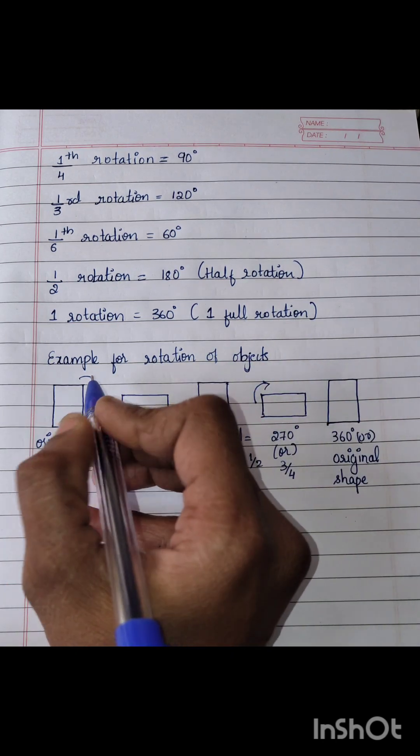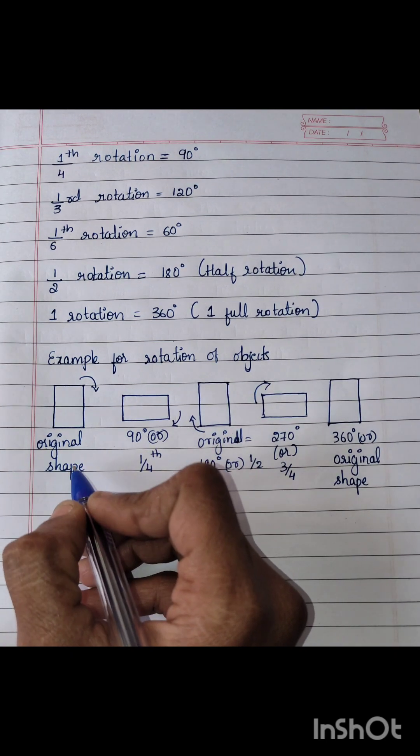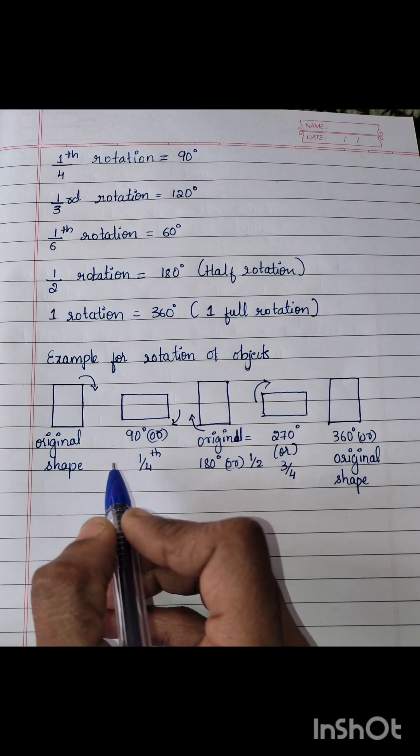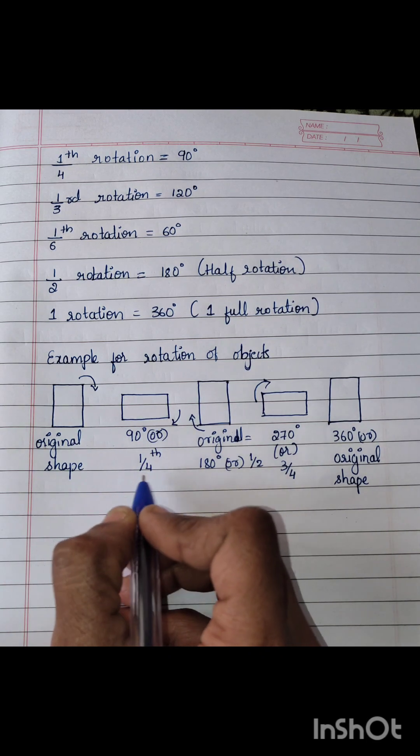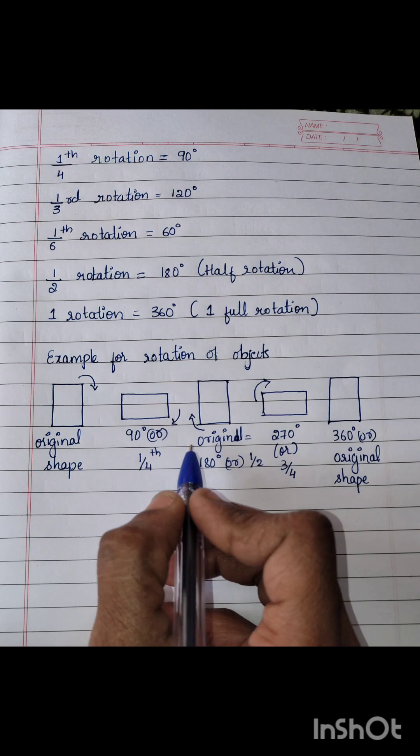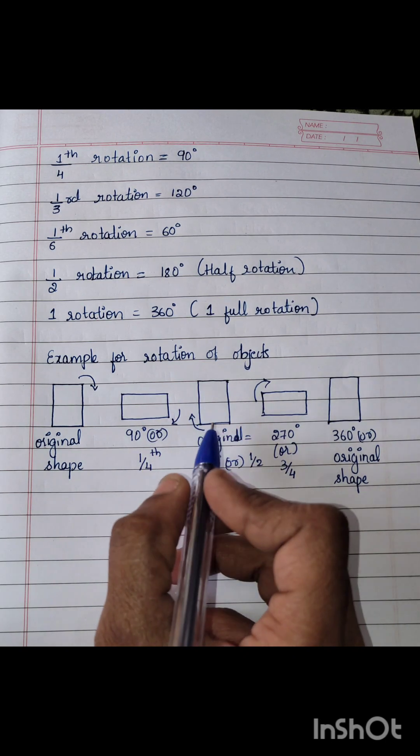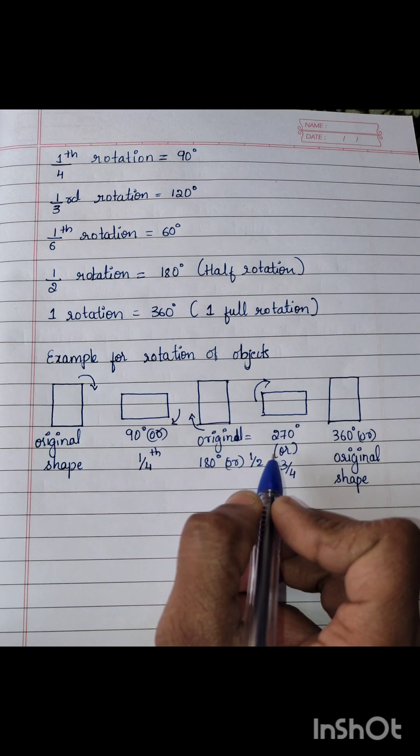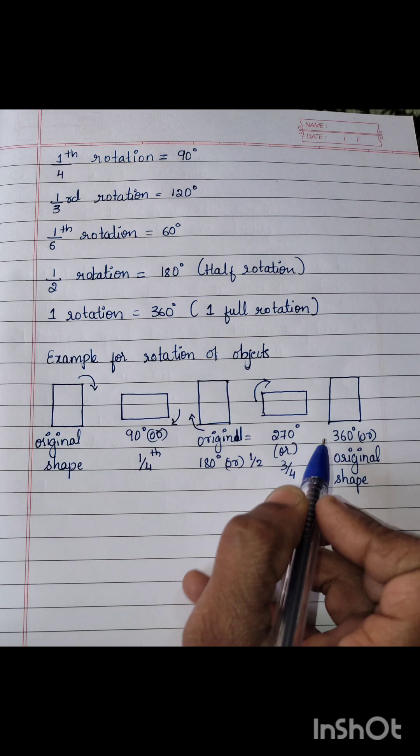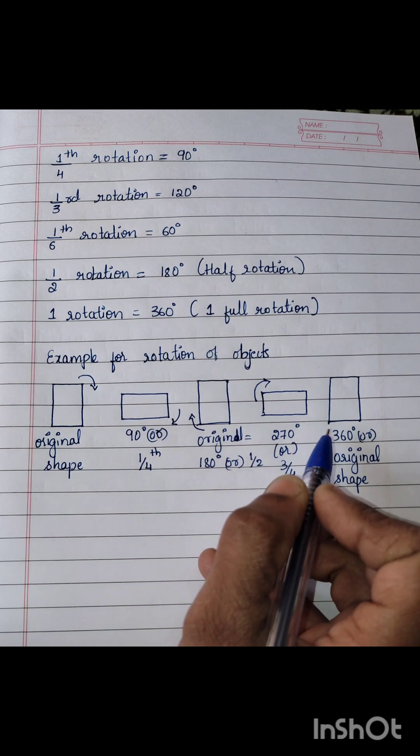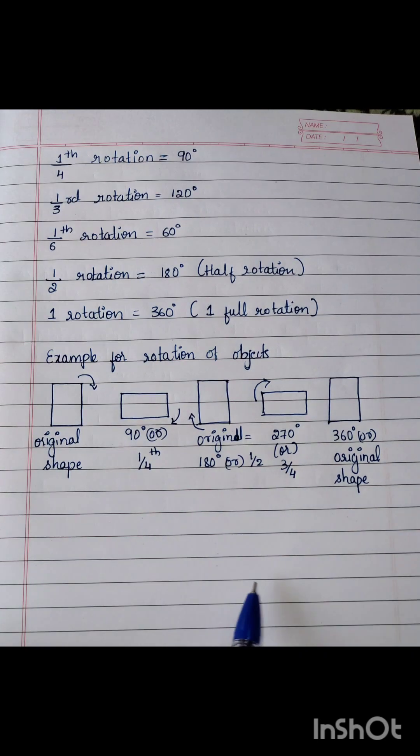Let's see the example here. Example for rotation of an objects. So this is the original shape. If you turn this shape to the 90 degree means one fourth it will be in this shape and half rotation or 180 degree. This is the original shape. Next 270 degree, that means three fourth rotation. Next if you turn it into one full rotation that means 60 degree, it will take the original shape.